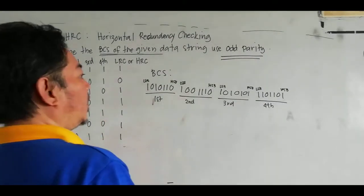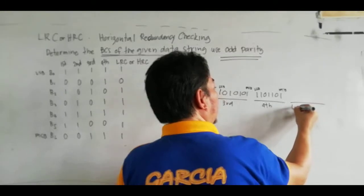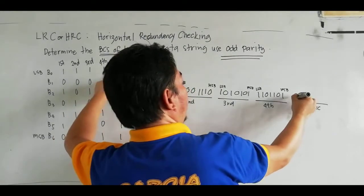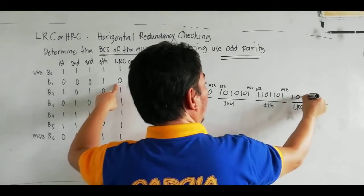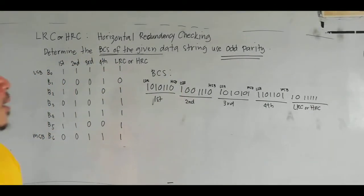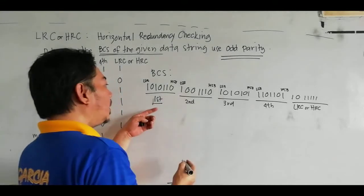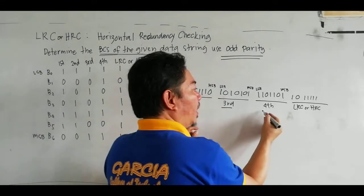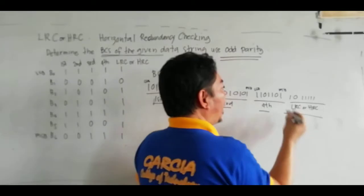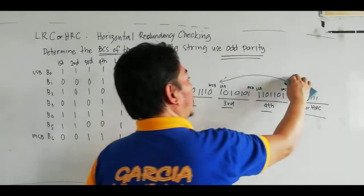The last row is your LRC or HRC: 1, 0, 1, 1, 1, 1, 1. So your block check sequence consists of the first data string, second data string, third data string, fourth data string — and your LRC or HRC is appended to all of your data strings.